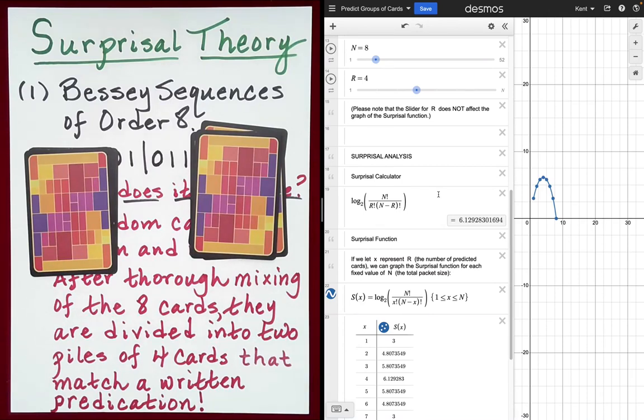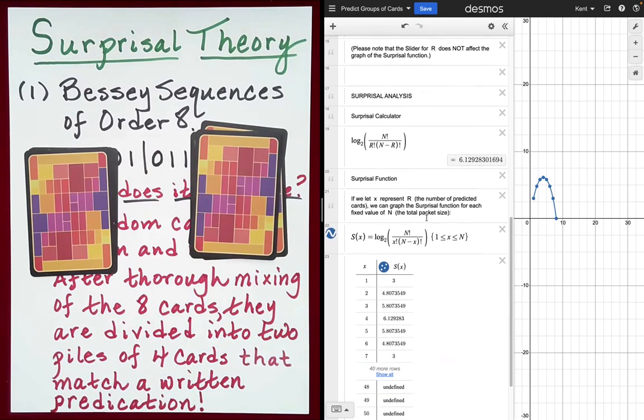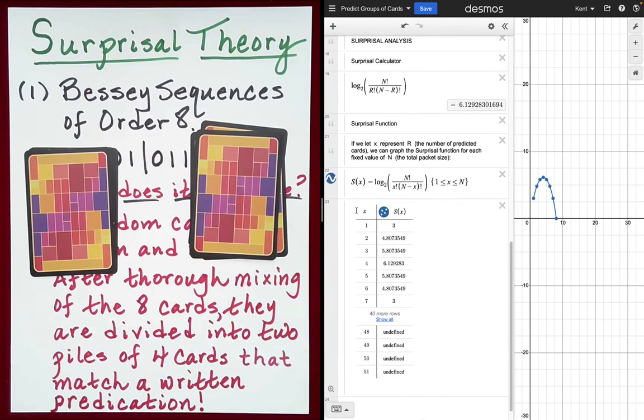And then what we've done below here is I've gone ahead and graphed it for various values. And remember, X represents how many cards or the size of the group that we're selecting. So we right now are focused on selecting four cards out of the eight card packet. And so there we go. There's our surprisal value that we saw earlier.